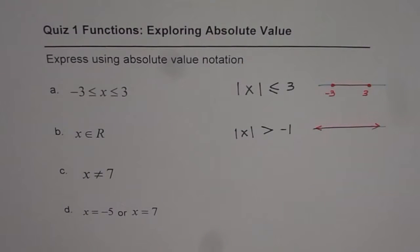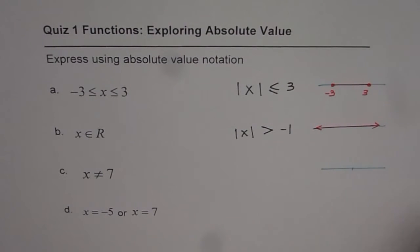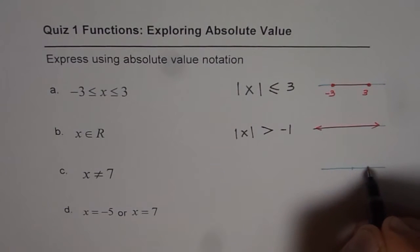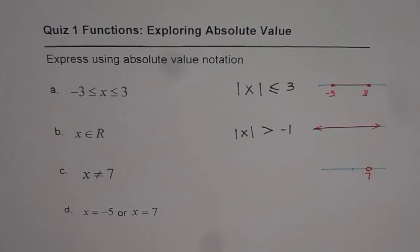Now, in the third case, we have x is not equal to 7. That means, on a number line, we are looking for all the values but not equal to 7. That means, there is a hole at 7. How are we going to represent this as an absolute function?